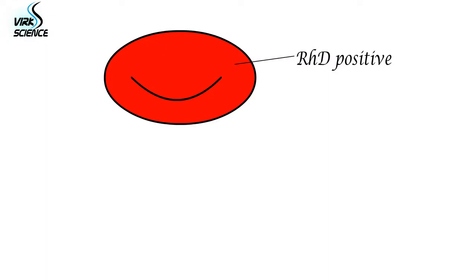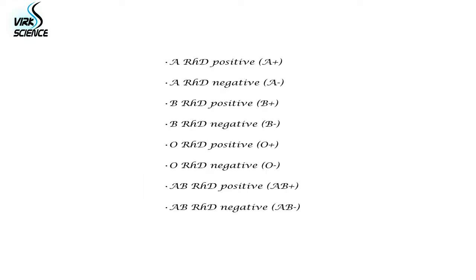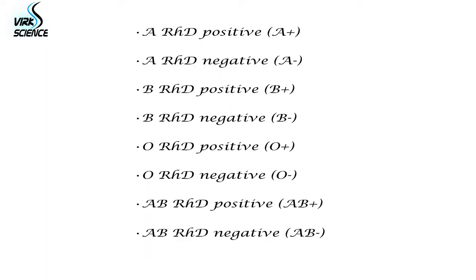If it's absent, your blood group is RHD negative. This means you can be one of eight blood groups.